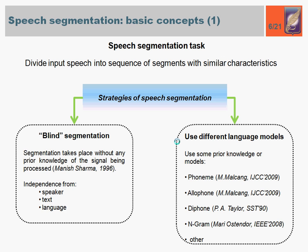The second strategy is when we take into account prior knowledge — for instance, samples of phonemes, allophones, audiophones, or use some language model. This strategy can improve general performance, but at the same time it leads to some constraints.